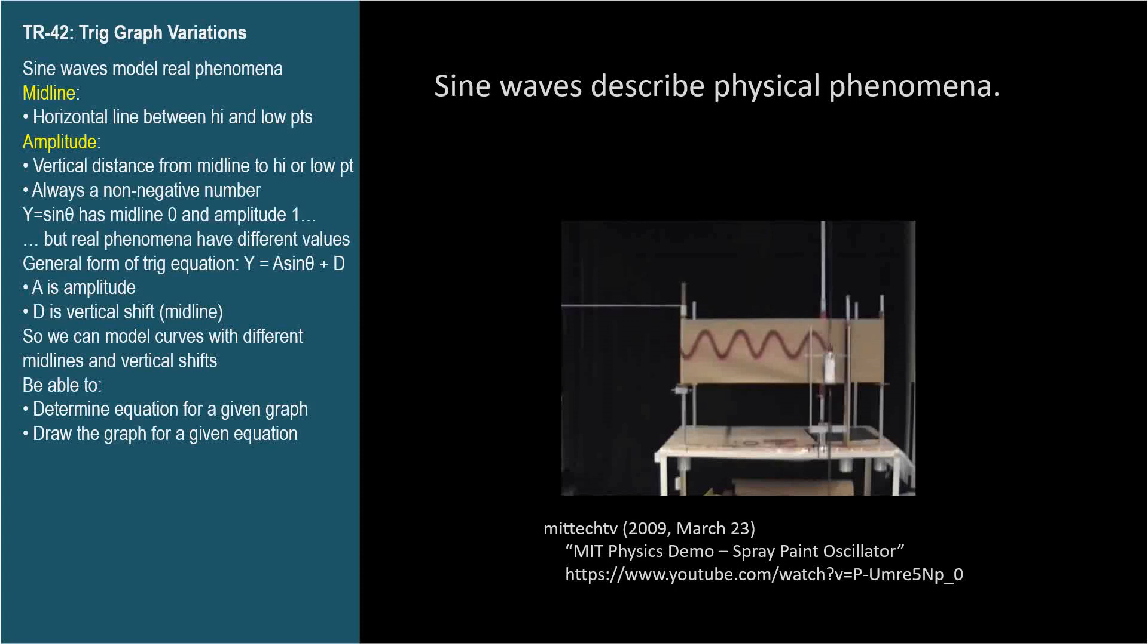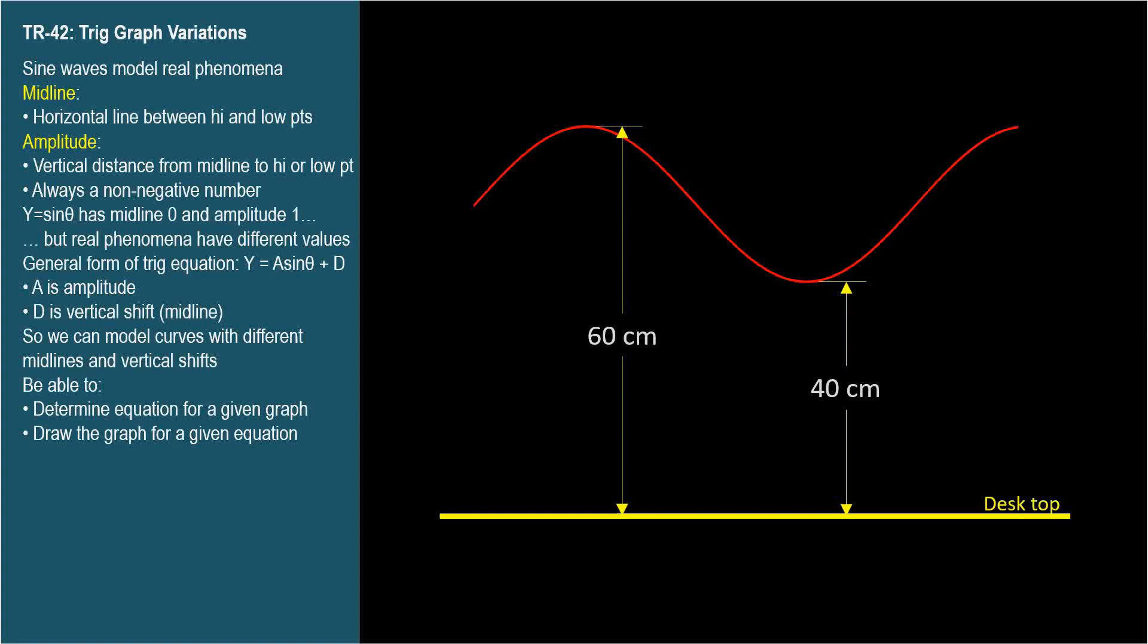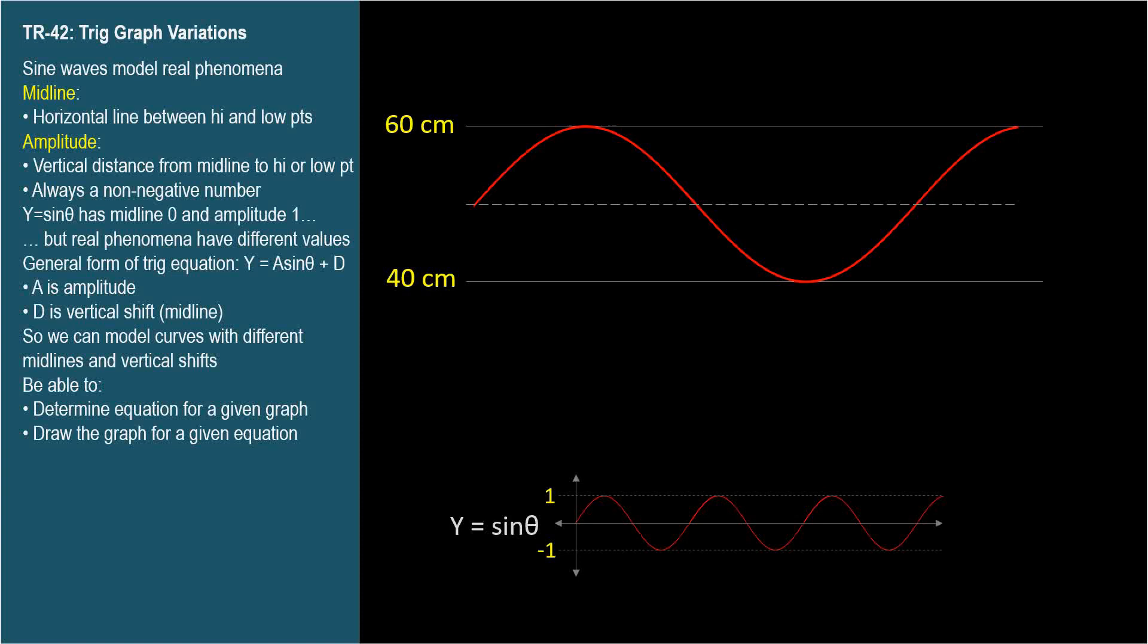Suppose we wanted to model the height of the wave above the surface of the desk using an equation featuring the sine function. The paint line oscillates up and down between 40 and 60 centimeters above the desktop, but the sine wave oscillates up and down between negative 1 and 1. So clearly, we need to apply some transformations to the sine wave to get it to model the oscillating motion of the spring system.